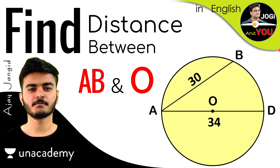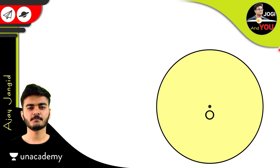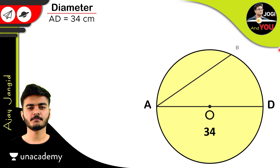For solving this question, we have a circle with diameter AD of length 34 cm. We also have a chord AB with a length of 30 cm.